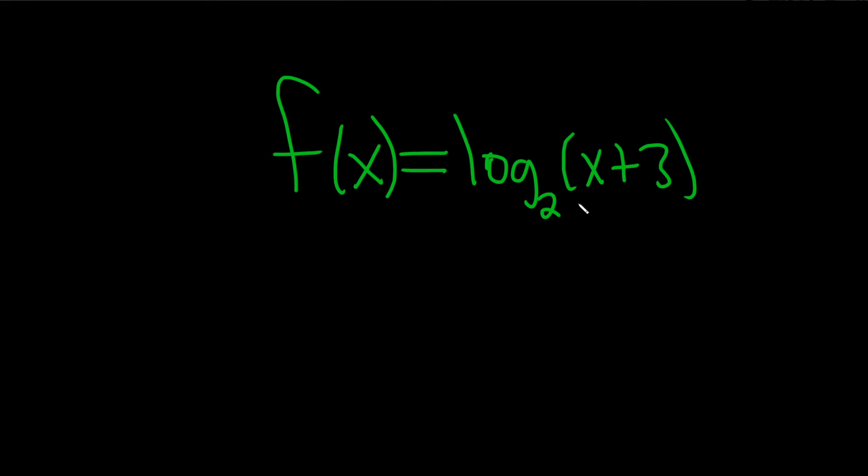So basically we're going to start by graphing log base 2 of x and then realizing that whenever you add a number to an x, you go left, in this case by 3.